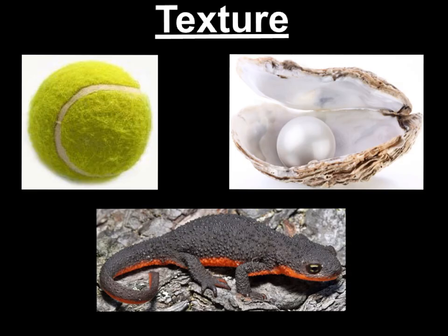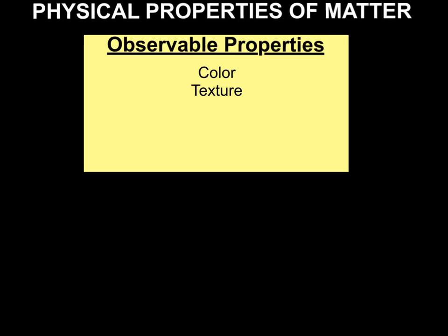Texture is the next observable physical property of matter. Examples include soft, fuzzy, smooth, and rough — and there are many more. Now add texture as an observable property of matter in your chart. Yes, spelling counts.